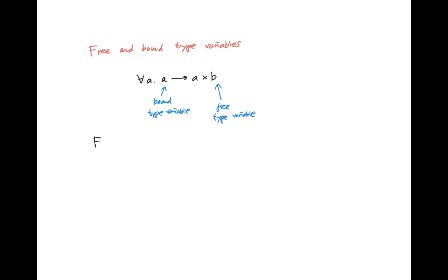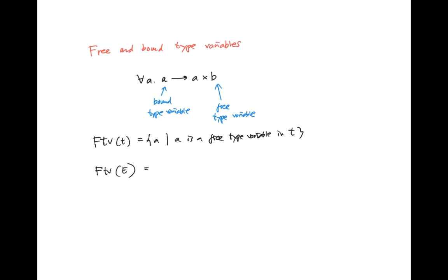We write, if we have a type expressed in T, the set of free type variables — that's the set of type variables A such that A is a free type variable in T. In the type environment E, we can also talk about the free type variables of E, and it's the union of all the free type variables in T where there is an X such that E of X is T — so it's the set of all free type variables mentioned in E.